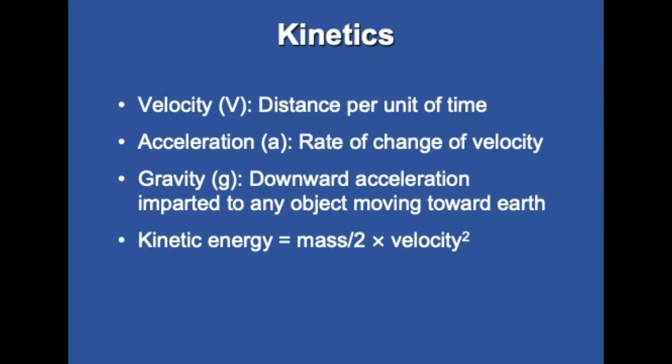Velocity is the distance an object travels per unit of time. Acceleration is the rate of change of velocity an object is subject to. Gravity is the downward acceleration imparted to any object moving towards Earth — during each second of a fall, velocity increases by 9.8 m/s². Kinetic energy is associated with an object in motion and reflects the relationship between the weight of the object and the velocity at which it's traveling. Velocity has a much greater effect than mass.